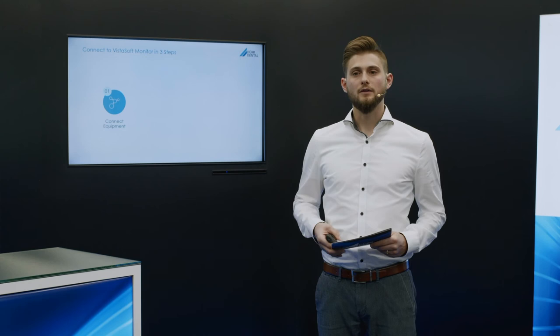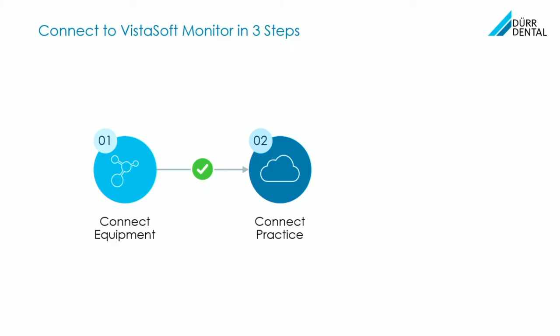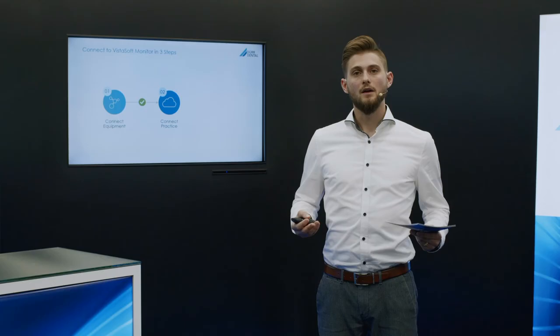What are the concrete steps to get started today? First, you connect your equipment to your practice network — we make use of the existing practice network, and you can connect your devices either directly via network cable or via the ConnectBox. Second, a small communication software is installed on your practice PC. This software's job is to gather the equipment data on the network, encrypt it, and securely send it to the cloud.